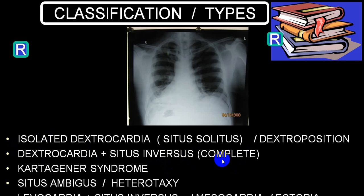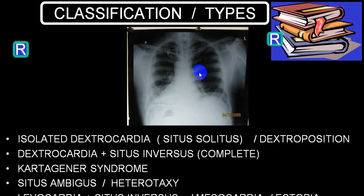The term complete situs inversus comes up frequently. There is another terminology called Kartagener syndrome — that is dextrocardia with agenesis of the frontal sinus, mucosal sinus agenesis, bronchiectasis, and may be associated with involvement of the pancreas and other structures.